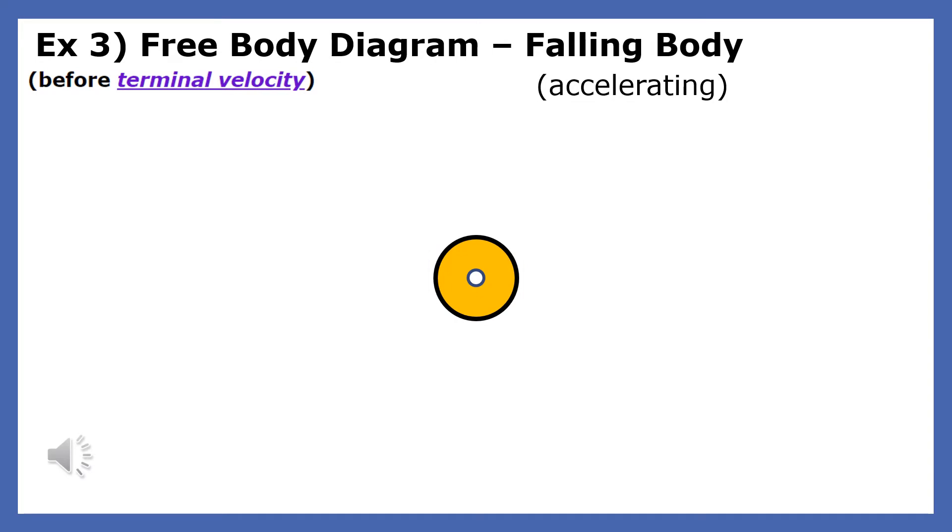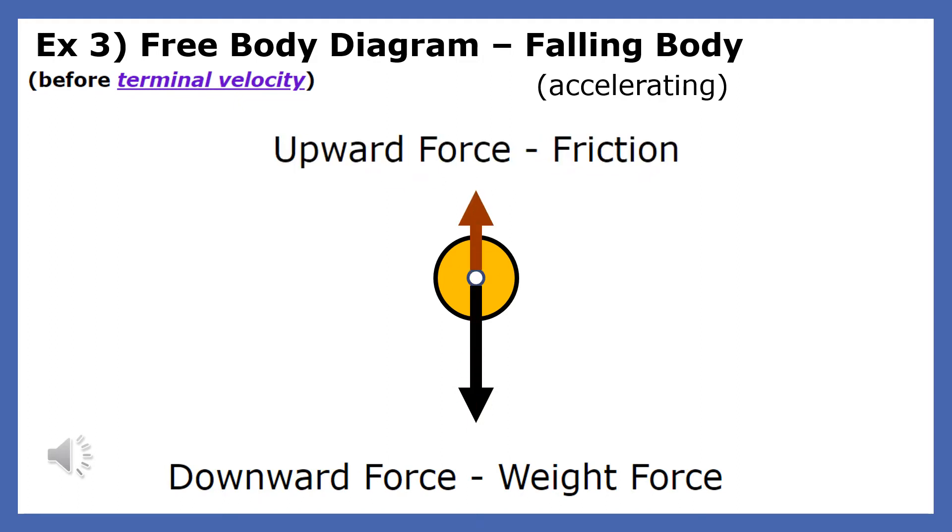Let's do a free body diagram for a falling sphere accelerating downward. There is a downward force of gravity and an upward force of friction. Since we are told that the body is accelerating downward, we must make the downward force greater than the upward force.